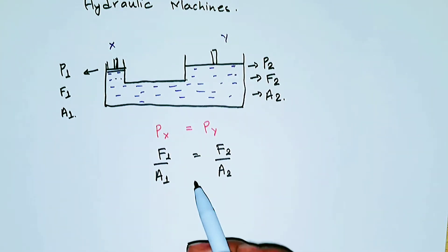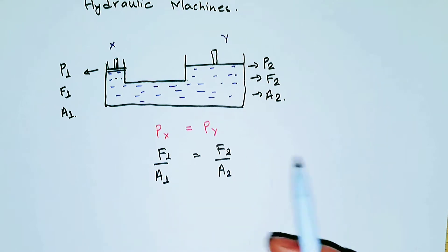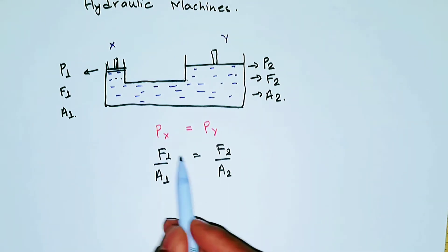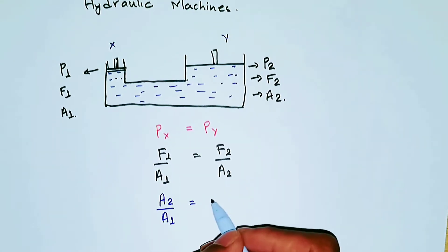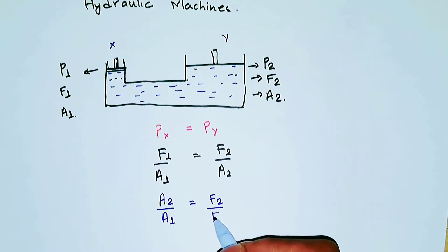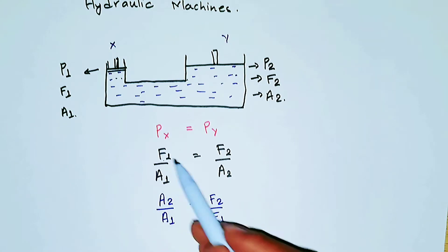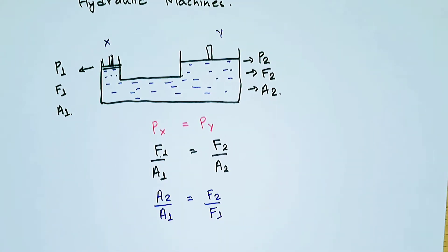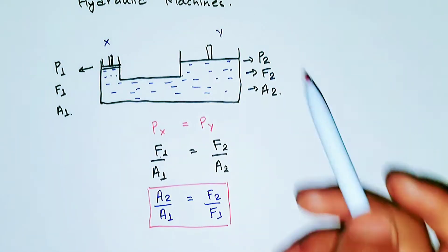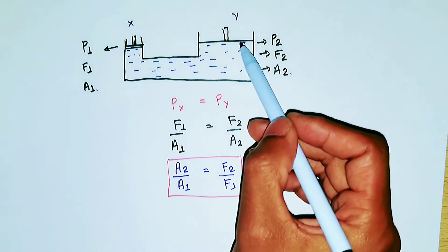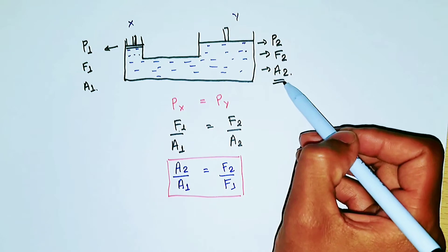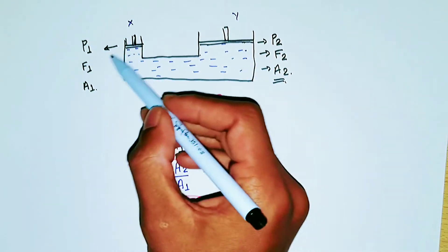According to Pascal's Law, the pressure at Mr. X equals the pressure at Mr. Y because there is liquid and liquid transmits pressure equally — that's Pascal's Law. So P1 = P2, meaning F1/A1 = F2/A2. Rearranging, we get A2/A1 = F2/F1. By looking at this machine, we know that area A2 is bigger than area A1.